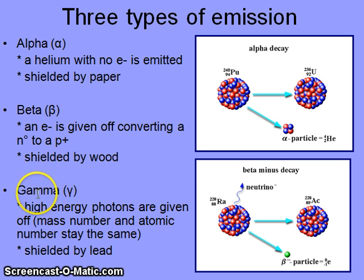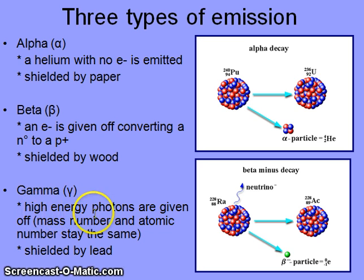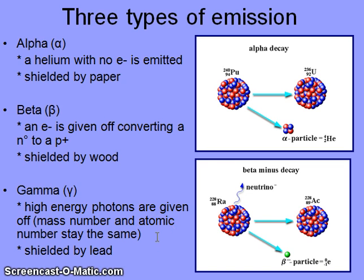The third type of emission is gamma emission, which involves giving off high-energy photons. The mass number and the atomic number stay the same, but because energy is being given off, it produces a nucleus that is slightly more stable than before the emission occurred. This type of emission can be shielded by something like lead.